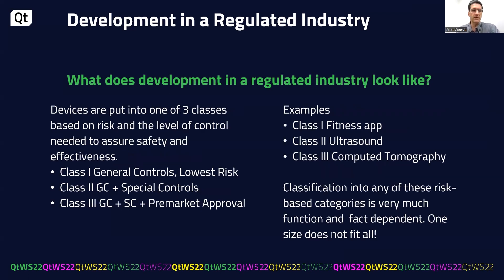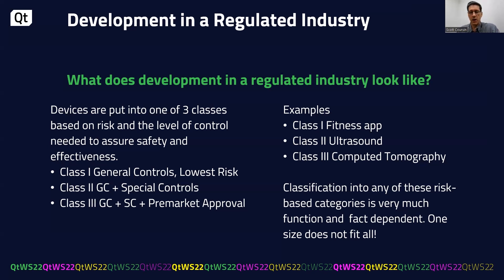The regulations applied depend on the type of product being offered in terms of risk, intended use, and the indications for use. Indications are things such as labeling or verbal communications from the manufacturer. Some examples: Class 1 would be something like a fitness app on your smartphone — it has a low amount of risk and the lowest amount of regulation. Class 2 would be something like ultrasound. Class 3 is a little riskier, something like computed tomography or CT, due to the extra radiation. Classification of these devices depends on the requirements for each class, and of course there are exceptions to these rules.